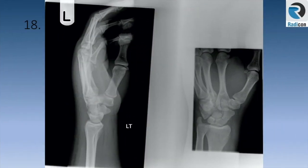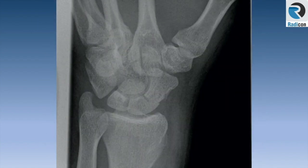Case 18 is a lateral and scaphoid view of the wrist. Let's zoom it up — an easy to spot scaphoid fracture. It is worth remembering that in the real exam and real life, more than 80% of abnormalities are easy to spot as long as you follow a checklist and review areas one by one.